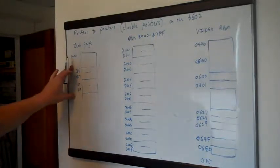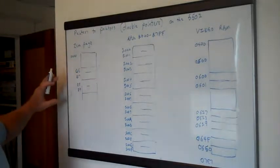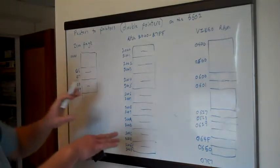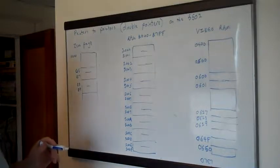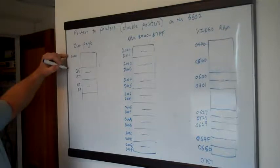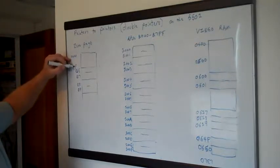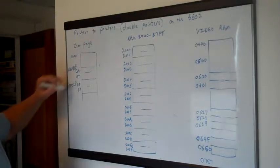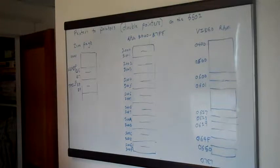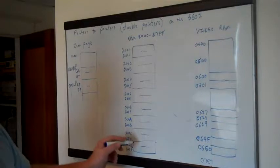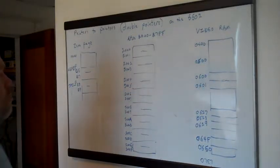Then we have a couple of locations in zero page. They're in zero page mainly because they're faster there, and also they have to be there to do the indirect pointer operations we need. At B6 we put head P, which is short for head pointer, and at B8 we put tail P. These are going to point to pointers in the list of pointers, which are then going to point to locations in video RAM.